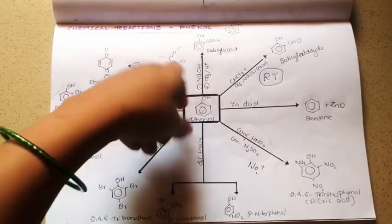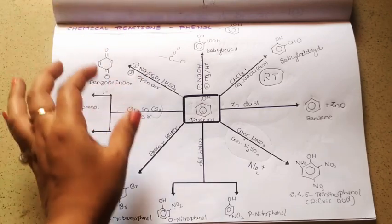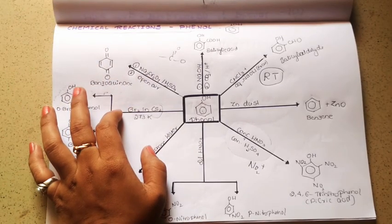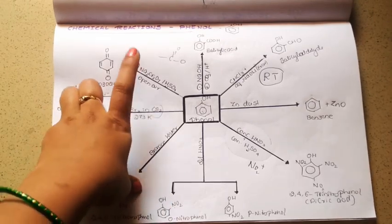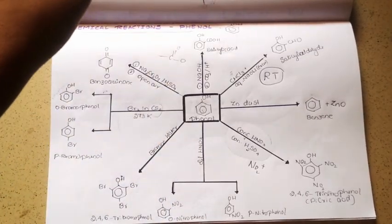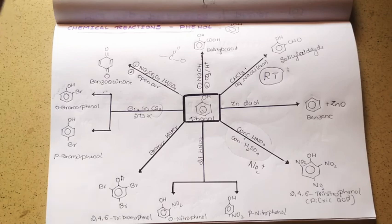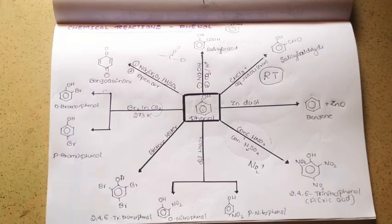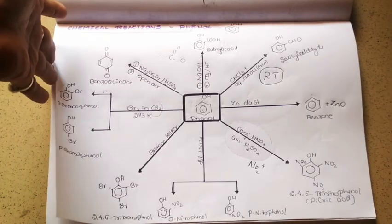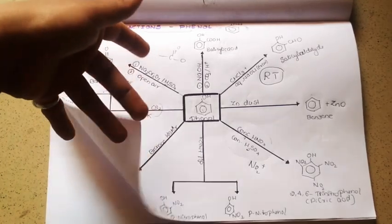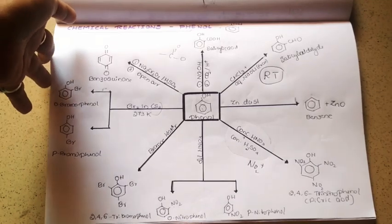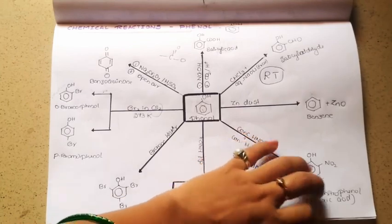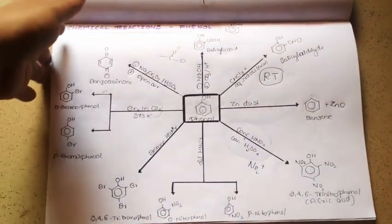To summarize: the reactions with nitric acid are called nitration, the bromine substitution is called bromination, and the open-air reaction is oxidation. These are some important chemical reactions of phenol, useful for both theory and competitive exams. In the next upcoming video, we will discuss about ethers — their chemical properties as well as preparation. Thank you.